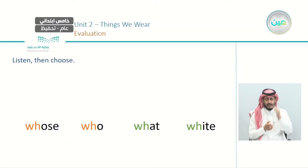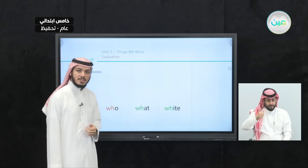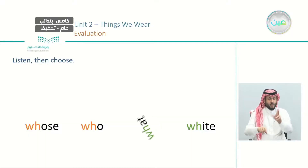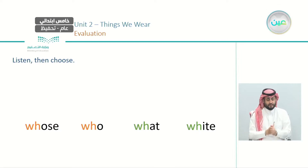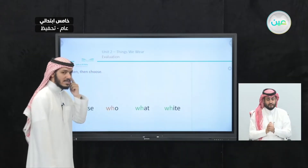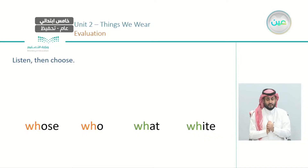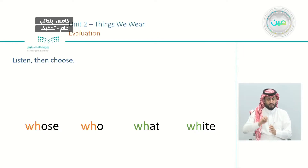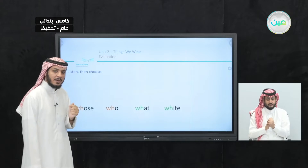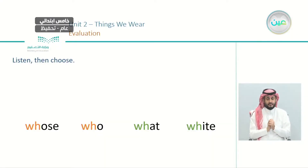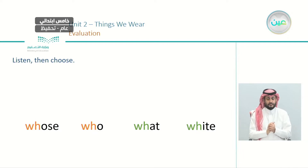Let's hear the third word: 'What.' Can you tell me where it is? This is 'what.' Say it with me: 'What.' And the last word: 'Who.' This is 'who.' So we have: 'whose' and 'who' — W is silent. But 'what' and 'white' — H is silent.